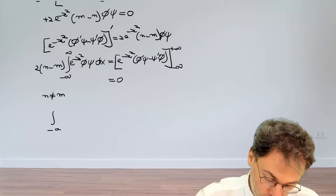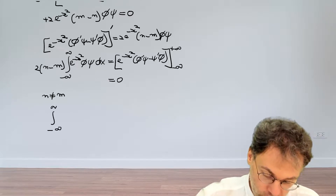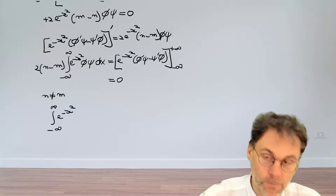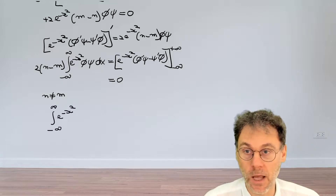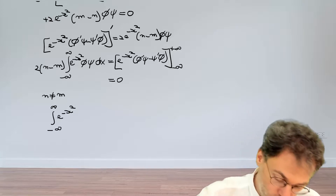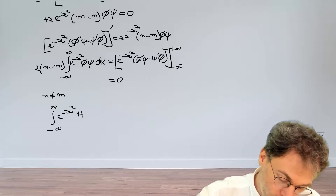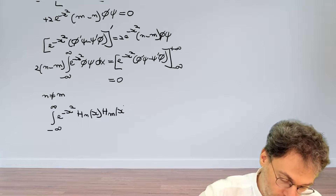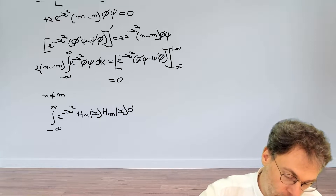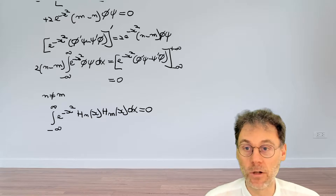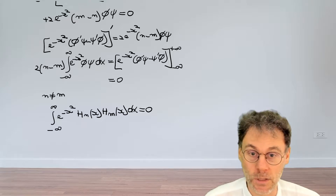If n and m are different numbers, the only conclusion is that the integral on the right is also equal to zero. That integral is: ∫_{−∞}^{+∞} e^(−x²) H_m(x) H_n(x) dx = 0, where H_m and H_n are the Hermite polynomials of order m and n respectively. We have shown that this integral vanishes when m ≠ n.